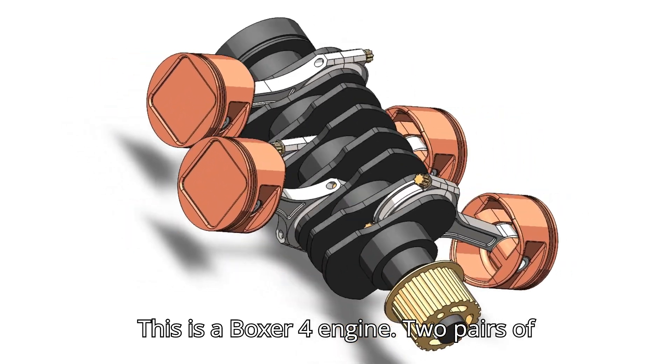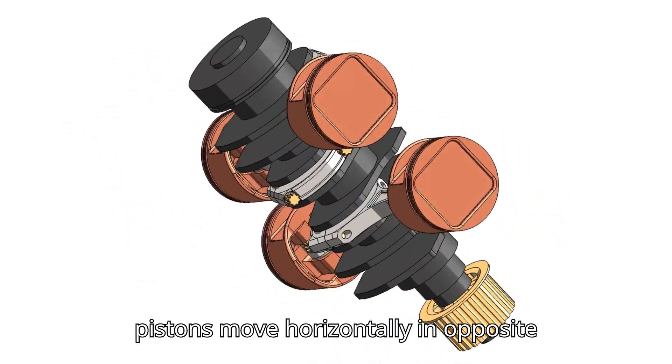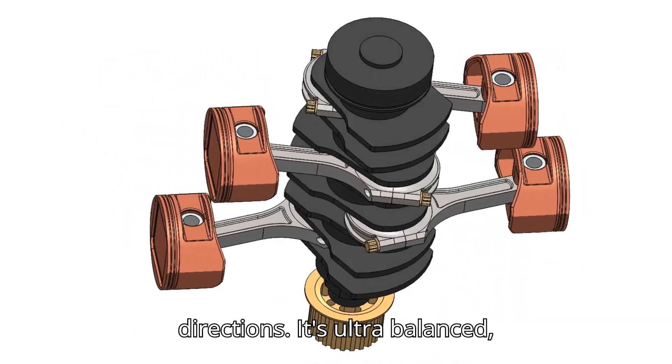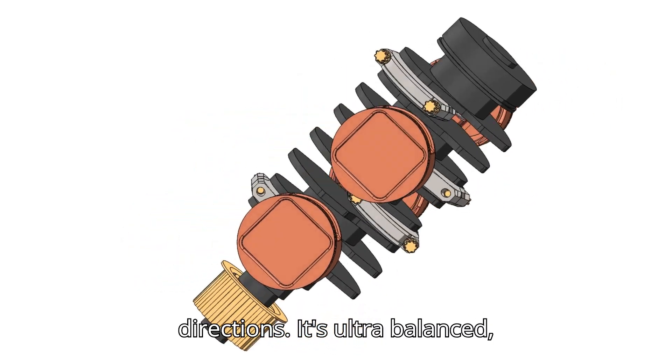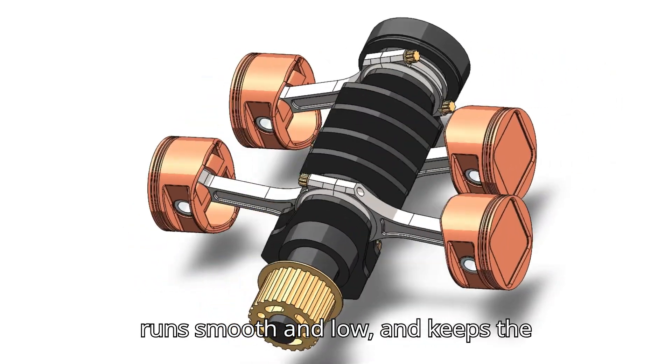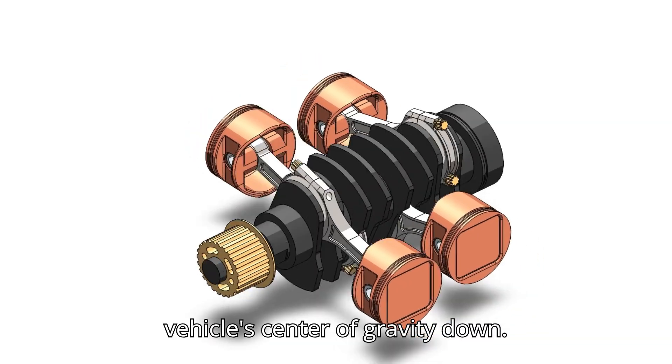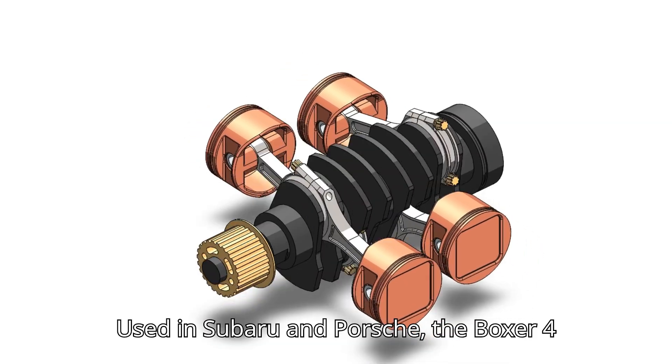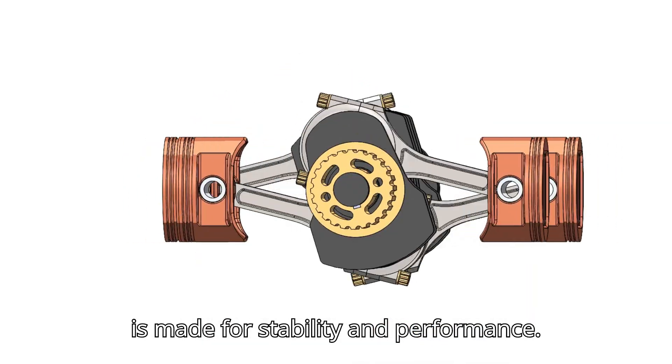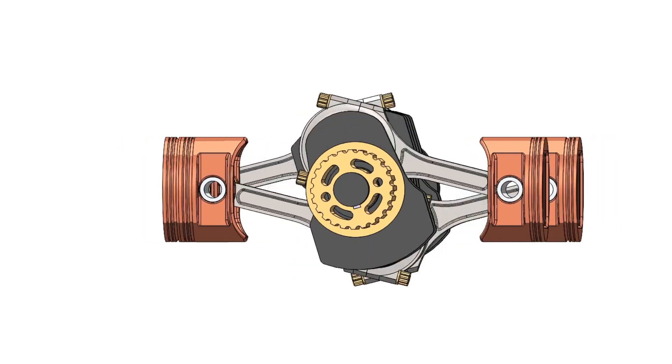This is a boxer four engine, two pairs of pistons move horizontally in opposite directions. It's ultra balanced, runs smooth and low and keeps the vehicle's center of gravity down. Used in Subaru and Porsche, the boxer four is made for stability and performance. It's built for stability and power.